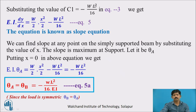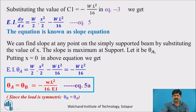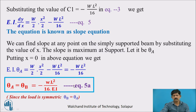Substituting C1 = −WL²/16 in equation 3, we get EI·dy/dx = (W/2)·(x²/2) − WL²/16. This is equation 5, known as the slope equation. We can find slope at any point by substituting the value of x. The maximum slope is at the supports. At support A, x = 0, so EI·θA = −WL²/16. Therefore θA = θB = −WL²/16EI (equation 5A). As the load is symmetric, θB equals θA.